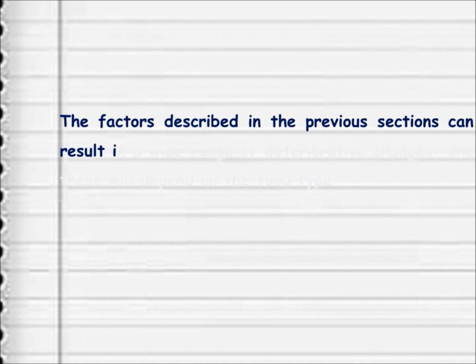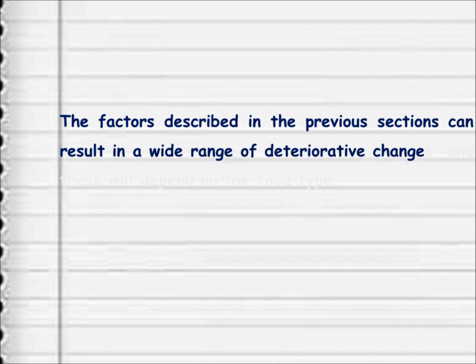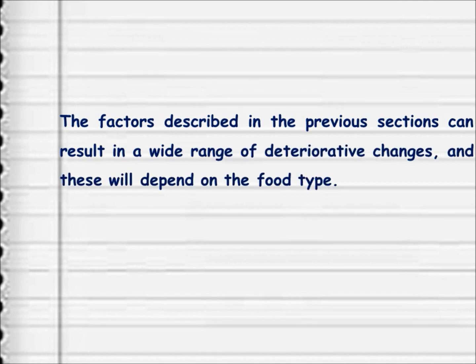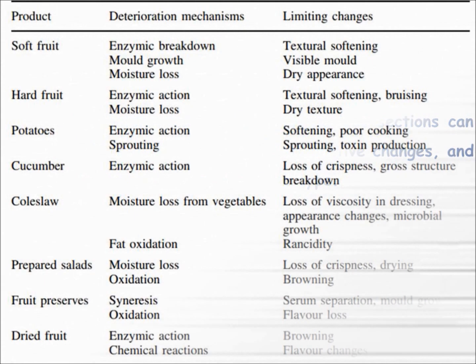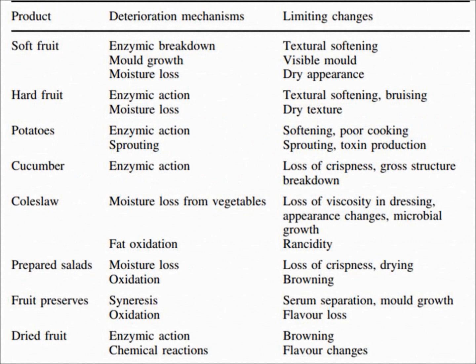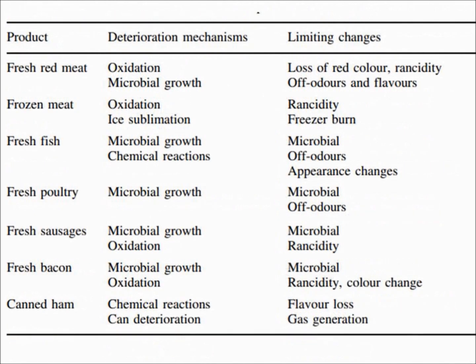The factors described in the previous sections can result in a wide range of deterioration changes, and these will depend on the food type. This table shows some examples of the main deterioration changes in a variety of food classes, and the consequential factors limiting shelf life.